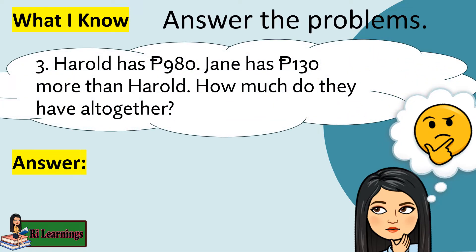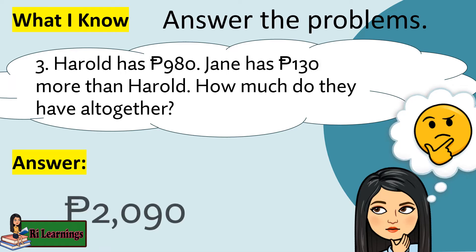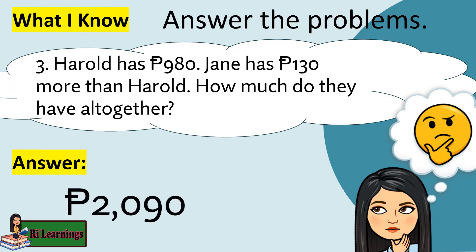Problem 3: Harold has 980 pesos. Jane has 130 pesos more than Harold. How much do they have altogether? Answer: 2,090 pesos.